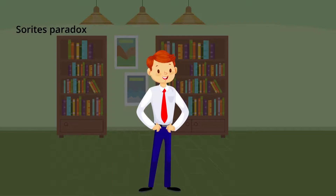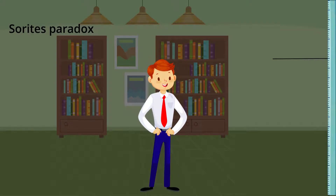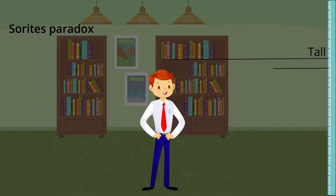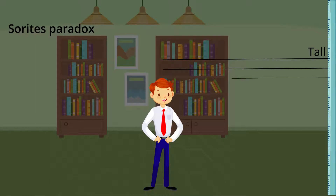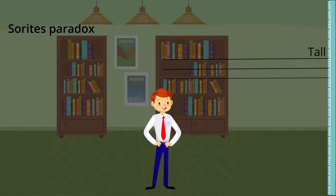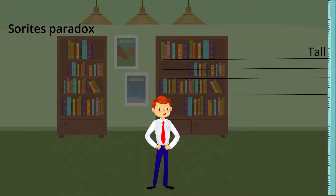The Sorites paradox lends support to the view that vague concepts such as tall fall on a spectrum. The paradox is this: if a person we believe is tall were one centimeter shorter, we would still say he or she is tall. If he or she were two centimeters shorter, our judgment would remain the same — he or she is still tall. But if we went on with this reasoning until we imagined the person being a hundred centimeters shorter, would we still call him or her tall? Surely not. This paradox is meant to show that there is not a cutoff point at which someone stops being tall. Tallness comes in degrees.